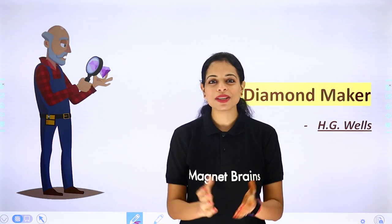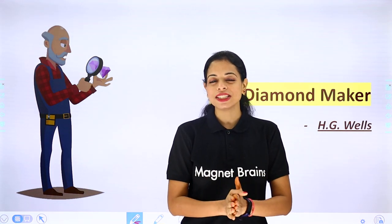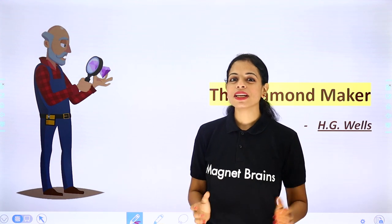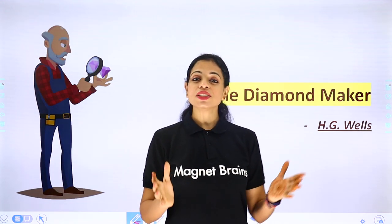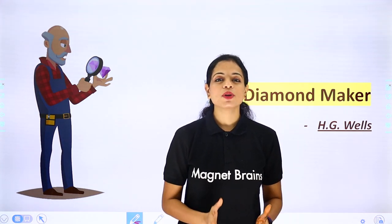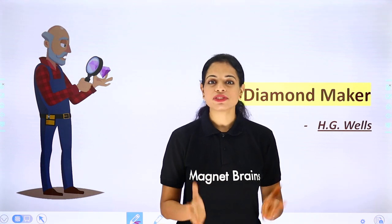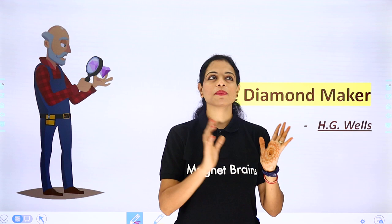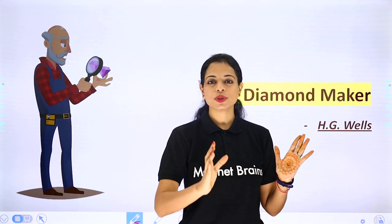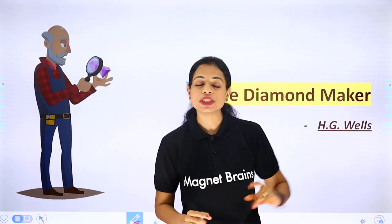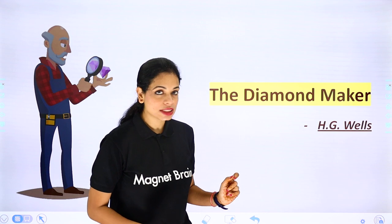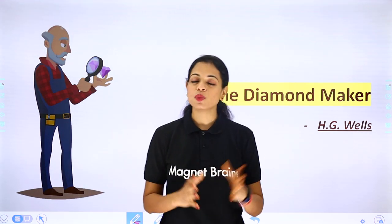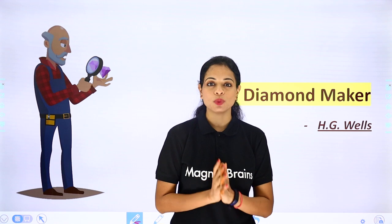Hello everyone, this is Swati. Welcome back to Magnet Brains. I am your English educator and in this video we are going to start a new unit from our book Oxford for Class 8. We have already completed 4 units. This is the 5th unit, Section A. The name of the chapter is The Diamond Maker, which has been written by H.G. Wells.